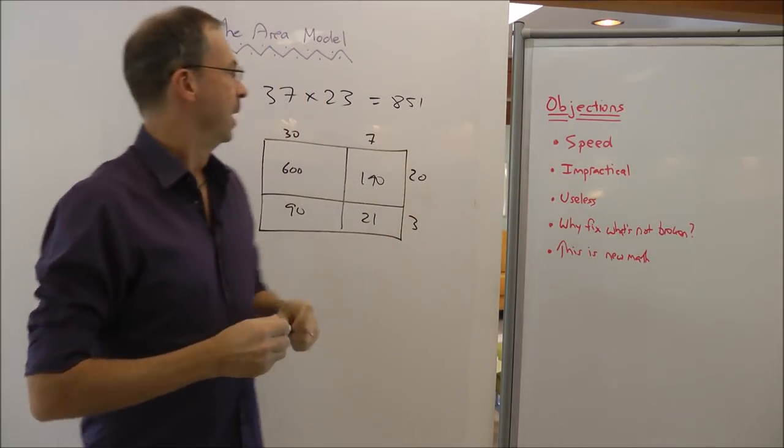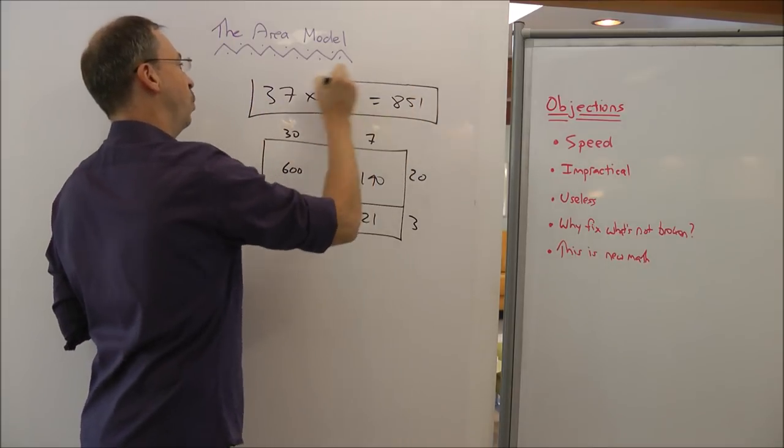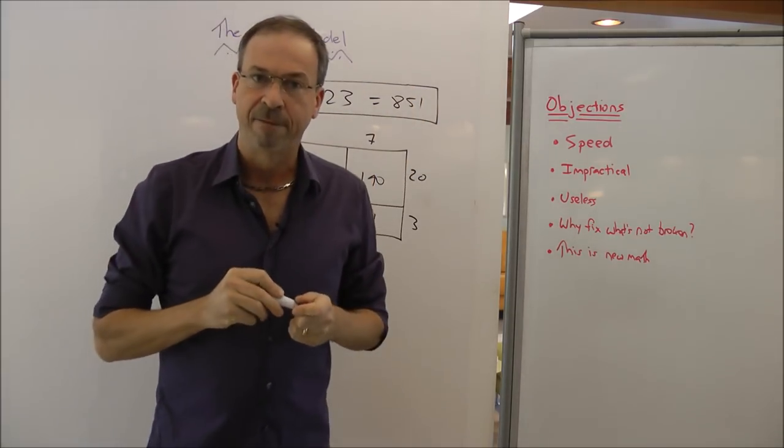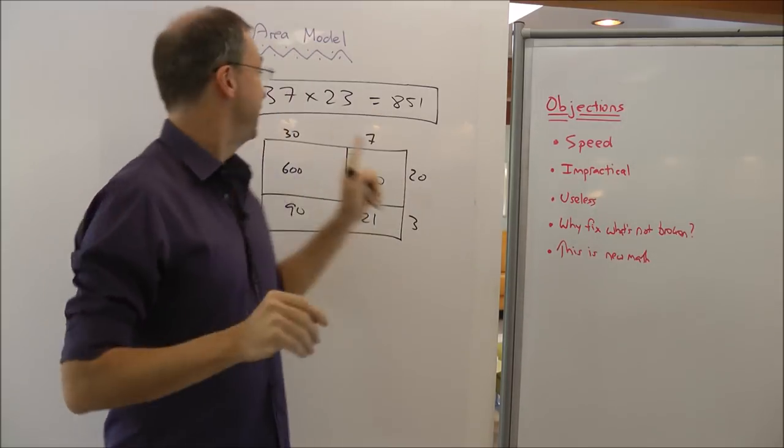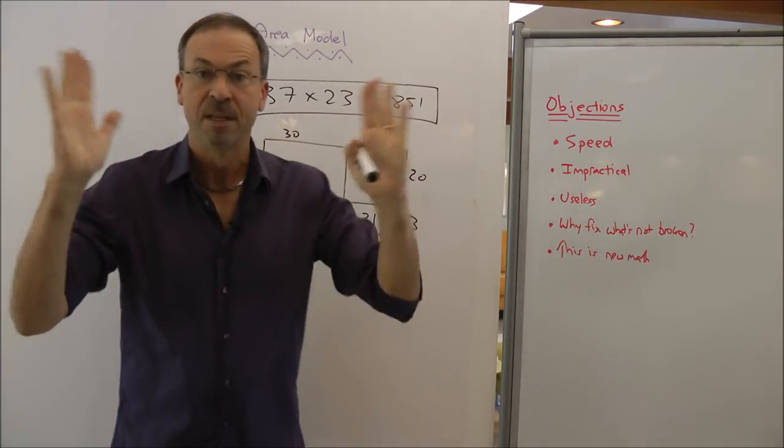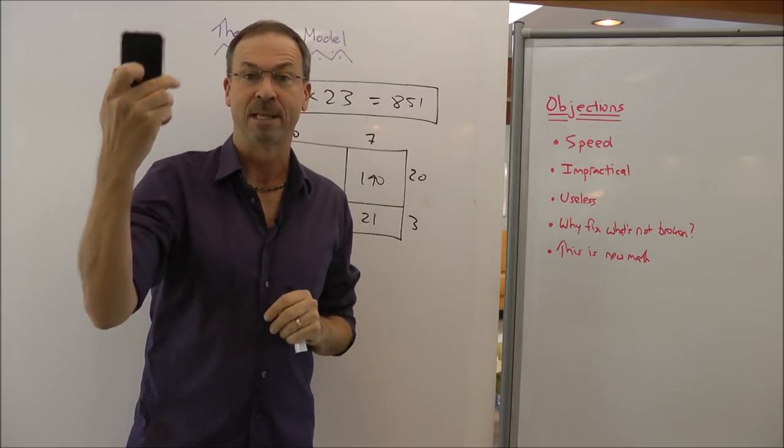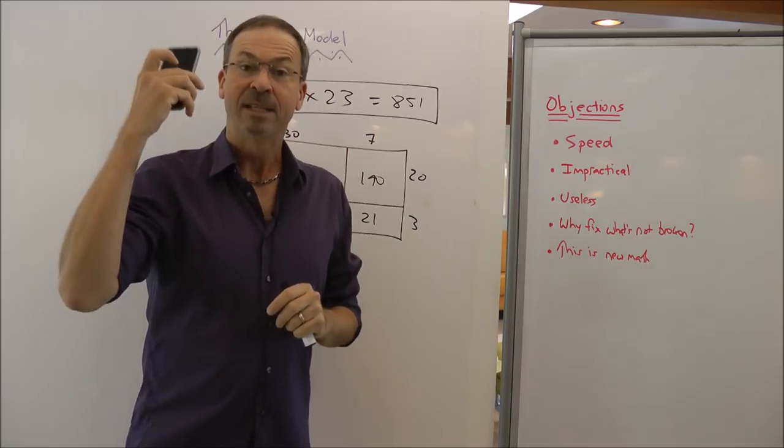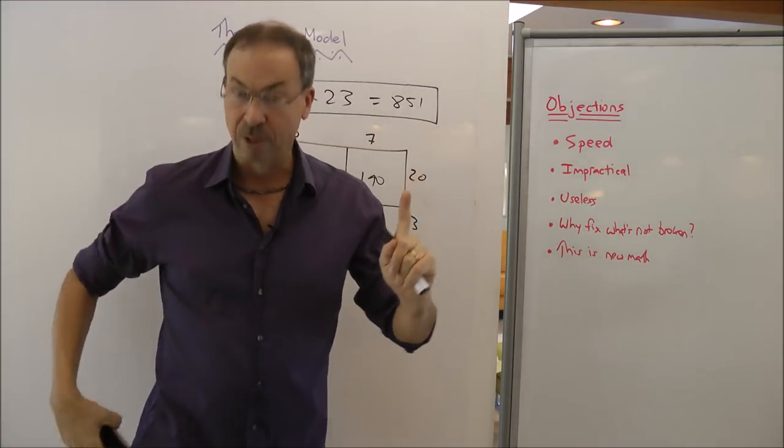Speed. If the issue is speed, that I need to work this out with speed in my life, then think about where we are in this day and age. We're in the 21st century. If I actually need to know what 37 times 23 is on the spot in everyday life, I would do this as a smart thinking adult. Pull out my smartphone. So if speed to getting answers is the issue, this is the correct 21st century approach. Which then begs the question, what do we need to teach our students?